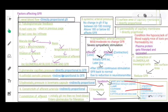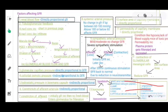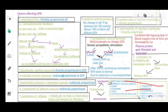Tenth: surface area of the capillary membrane — it is directly proportional to GFR. The greater the surface area of the membrane, the greater the filtrate produced.